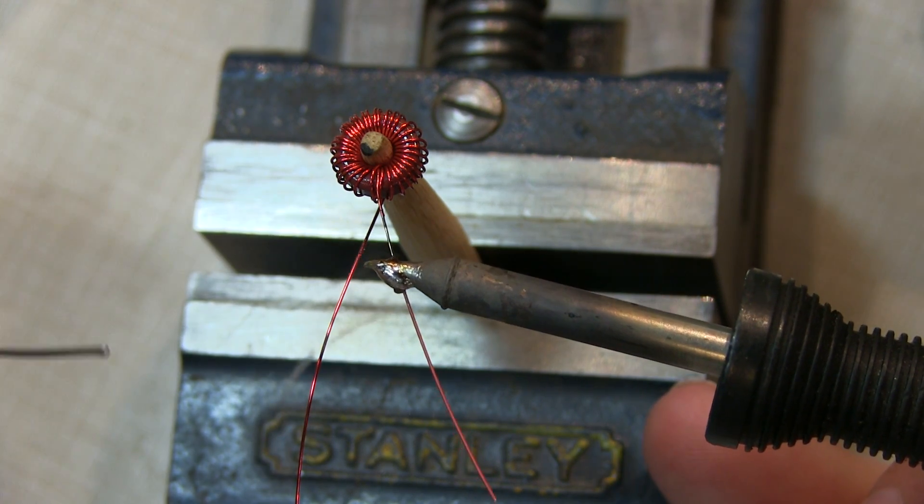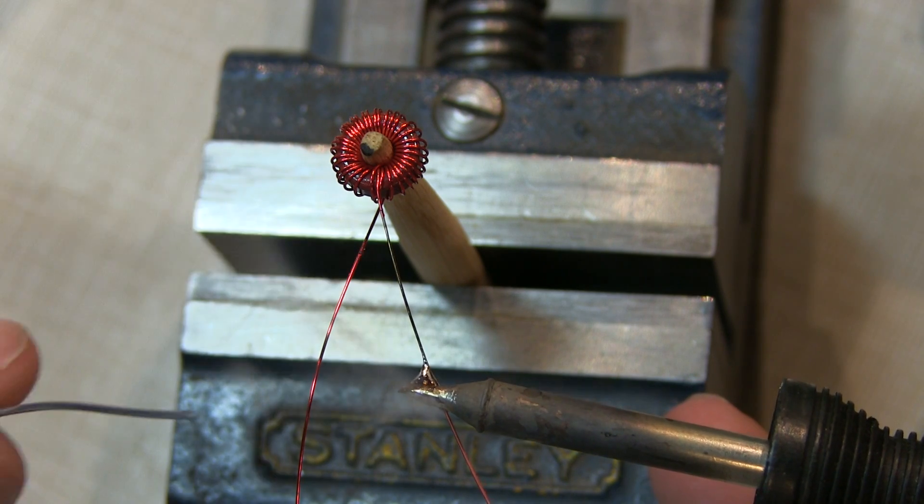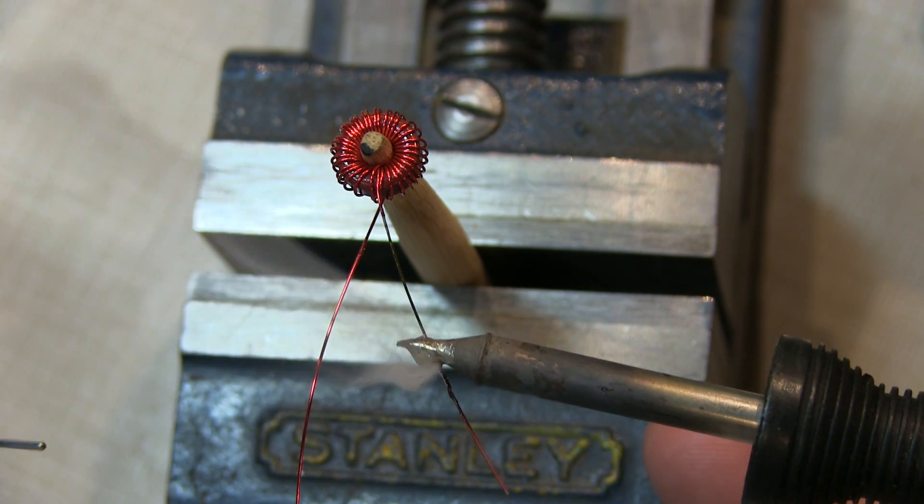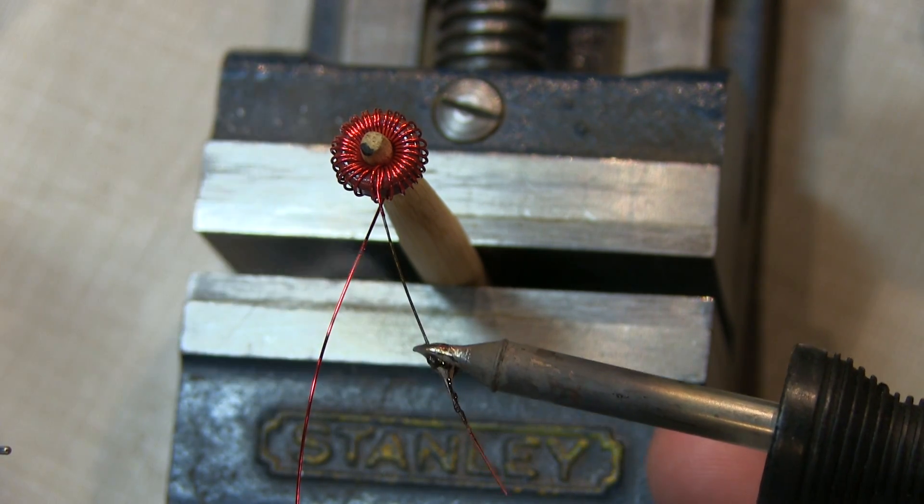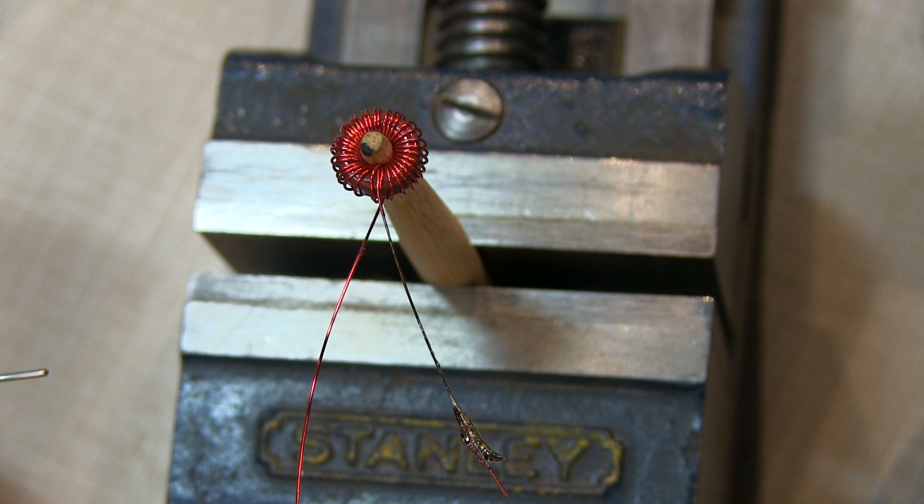And you bury it in the solder and it just kind of boils away the enamel and as you draw the wire across or the solder across, it just creates a nice tinned wire. And this doesn't work for all of the epoxy types that you'll find on these wires but for the type that I'm using here it works really well.